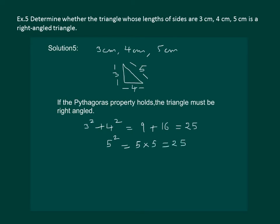That means the Pythagoras theorem holds for the given set of measures, hence such a right-angled triangle is possible.